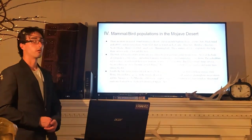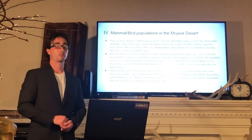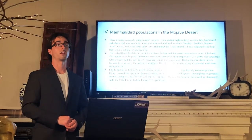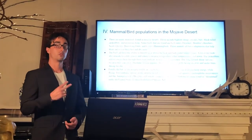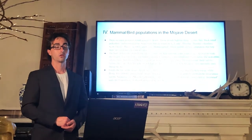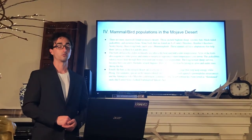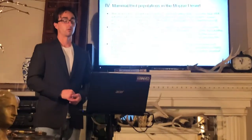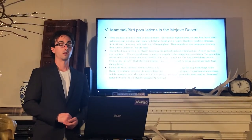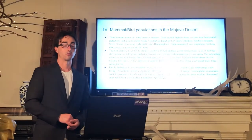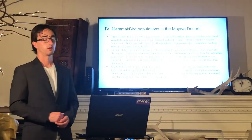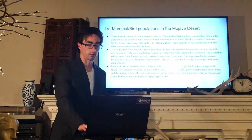The bats in the Mojave Desert survive by having large, hairless wings that help conserve energy while flying. Two endemic species in the Mojave Desert are the Mojave ground squirrel, Spermophilus mohavensis, and the Amargosa vole, Microtus californicus scirpensis. The desert tortoise has been listed as threatened under the United States Federal Endangered Species Act.